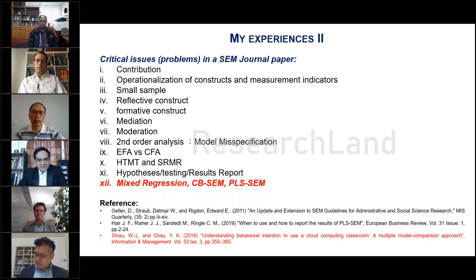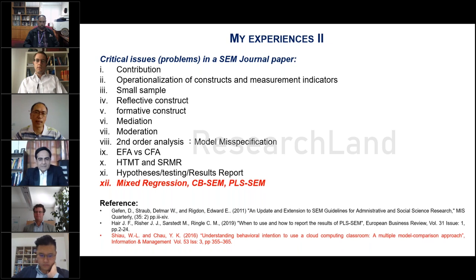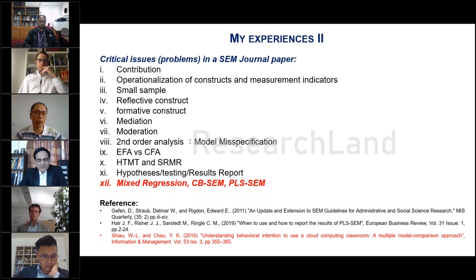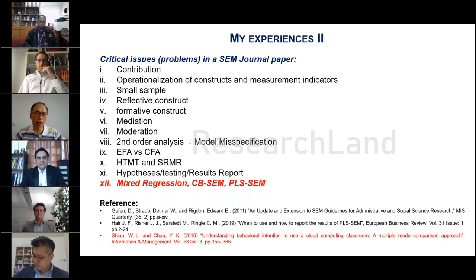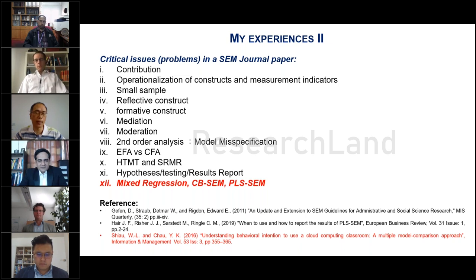My second part covers experience not only for special issues but for most journals. I have reviewed many papers submitted to journals like MIS Quarterly and AIS journals. I list the critical issues that lead to rejection. The top one: make your contribution clear. The second: some submissions lack operational definitions of constructs and measurement indicators, so we don't know what you are measuring.